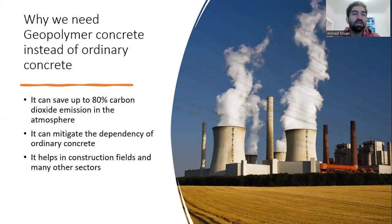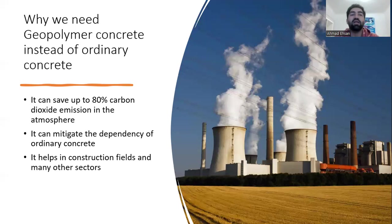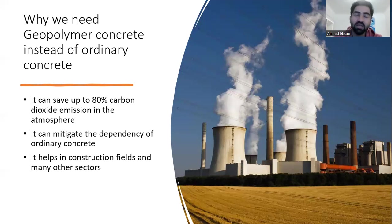I'm telling you about geopolymer concrete — why we need it — and a comparison with ordinary concrete, how it works and what it's going to save and how. It can save up to 80% carbon dioxide emission in the atmosphere, and it also mitigates the dependency on ordinary concrete.